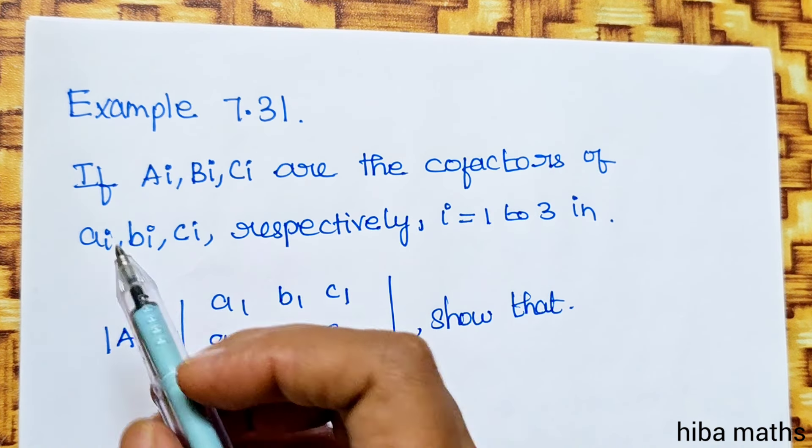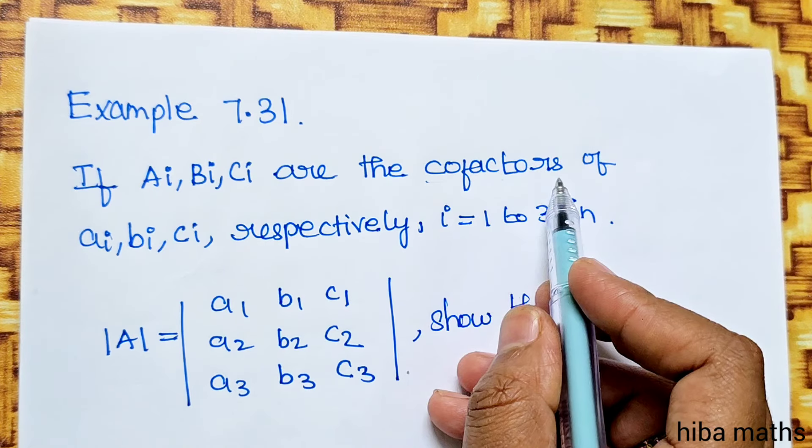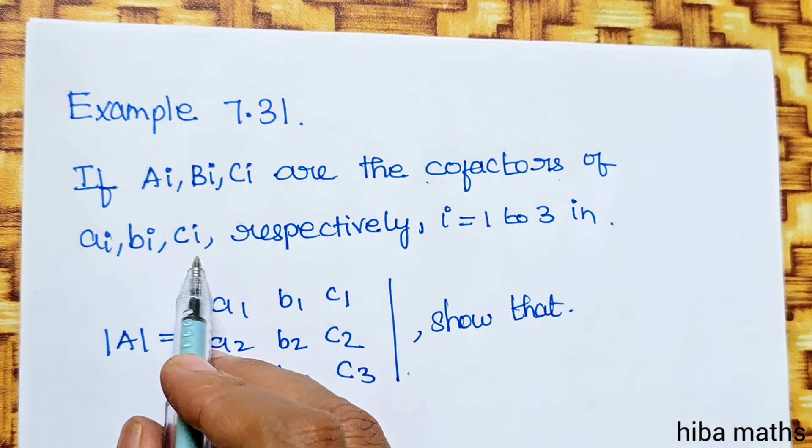Example 7.31: If A_i, B_i, C_i are the cofactors of a_i, b_i, c_i respectively,